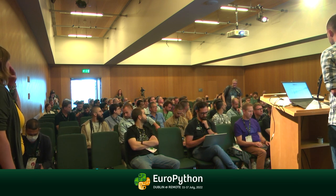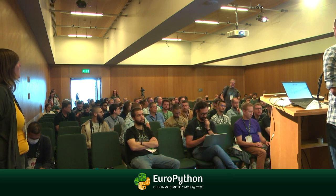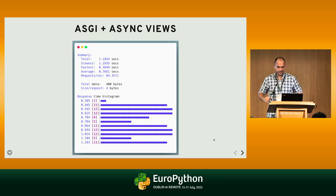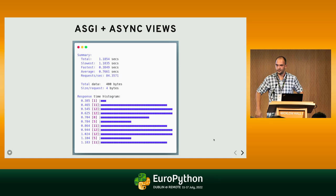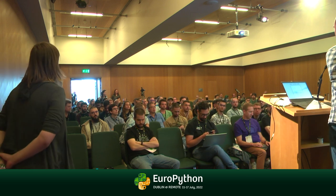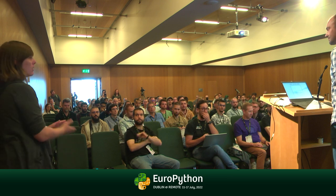Question: Are there benchmarks available comparing traditional Django and the async way? What I used was a CLI tool — 'hey' — where you specify how many requests to send simultaneously and in what portions. I sent a single portion of 100 requests to the view. Thank you all for coming.